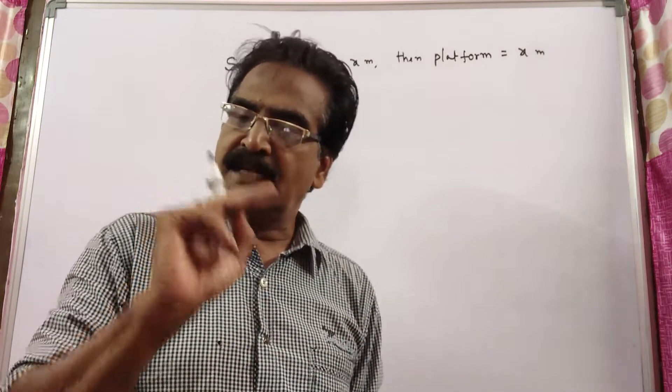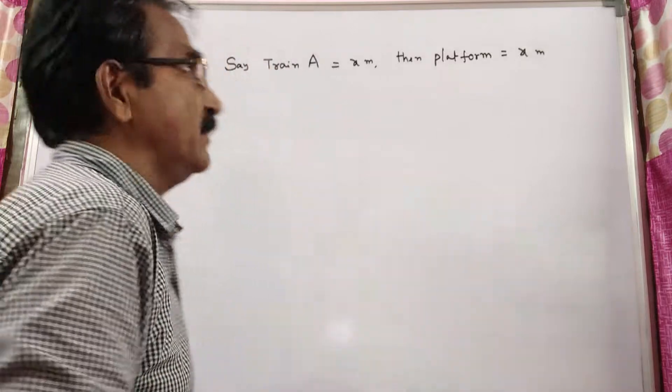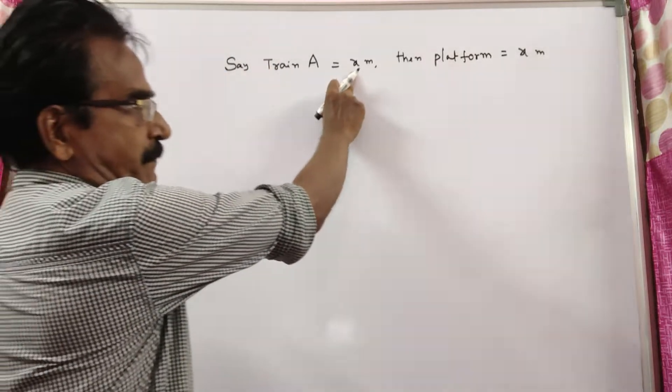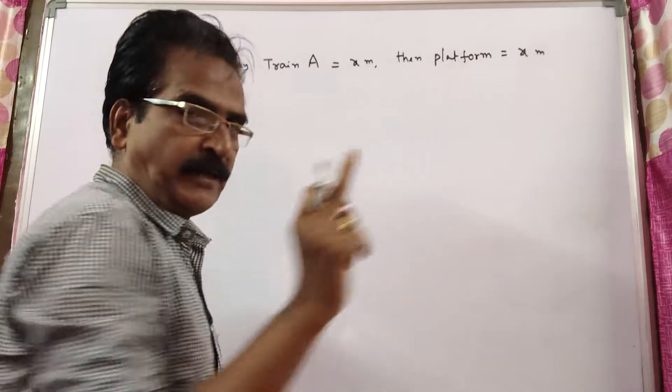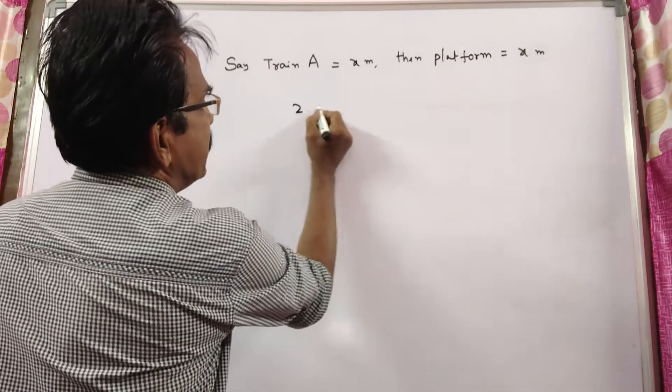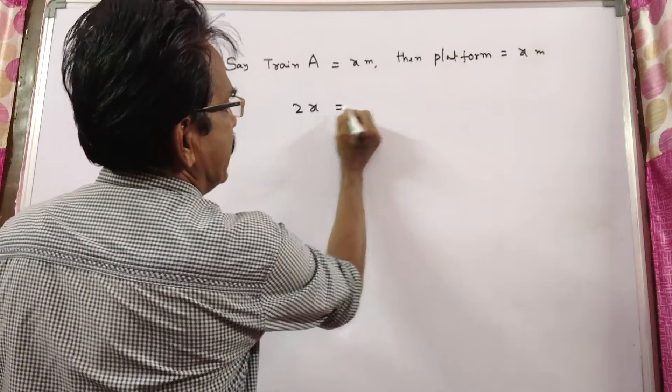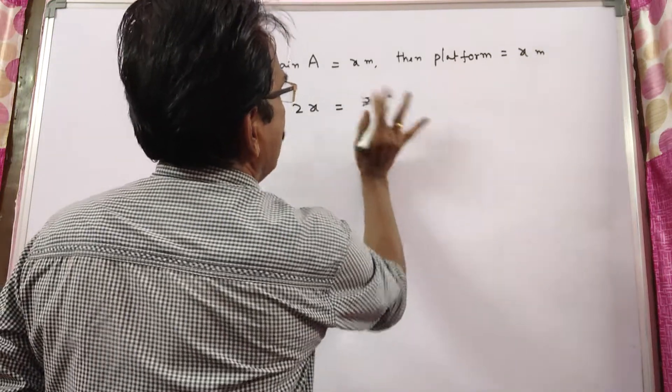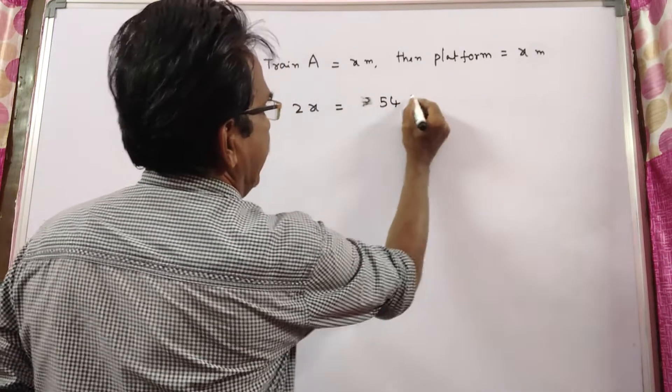Here distance means train length plus platform length. Let's say train length is x meters, then platform is also x meters since both are same in length. So distance 2x is equal to velocity 54 kmph times time 36 seconds.